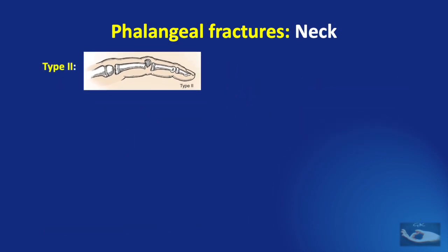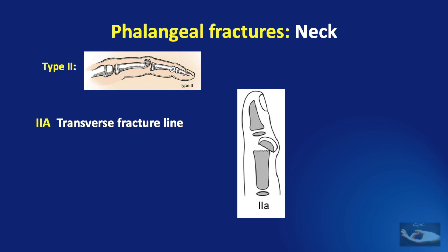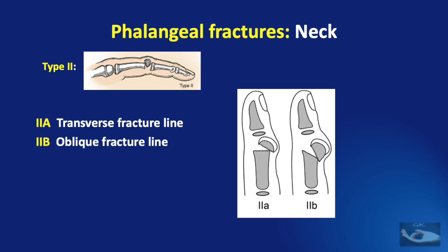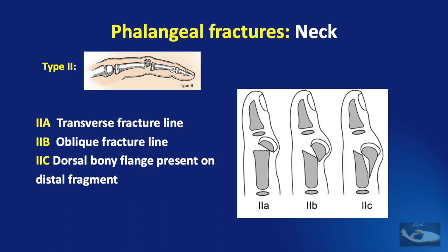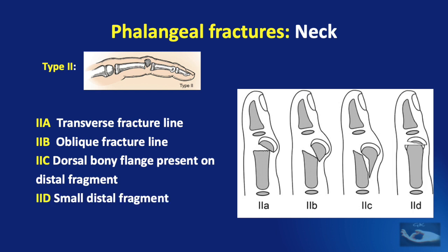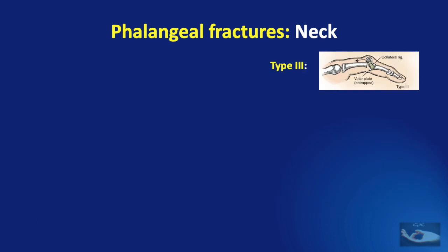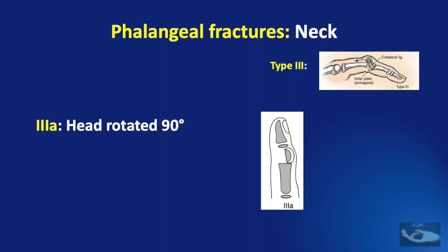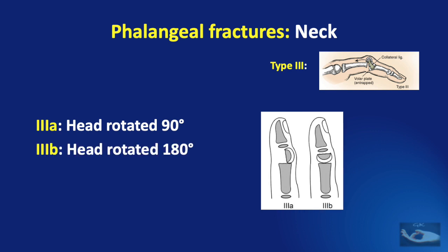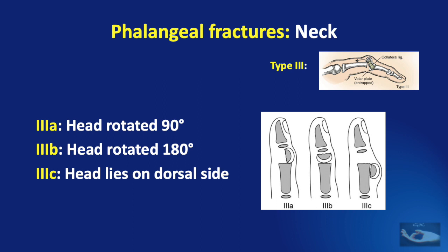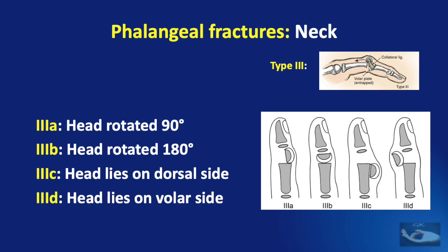Type 2 phalangeal fracture has been further classified into Type 2a with a transverse fracture line, Type 2b with an oblique fracture line, Type 2c with a dorsal bony flange on the distal fragment, and Type 2d with a very small distal fragment. The completely displaced Type 3 has also been classified into four subtypes: Type 3a where the head is rotated 90 degrees, Type 3b where the head is rotated 180 degrees, Type 3c where the head lies on the dorsal side of the proximal fragment, and Type 3d where the head lies on the proximal part of the fractured bone.